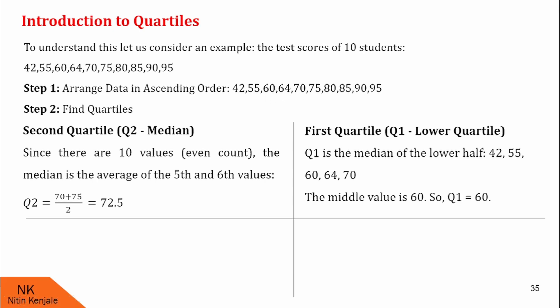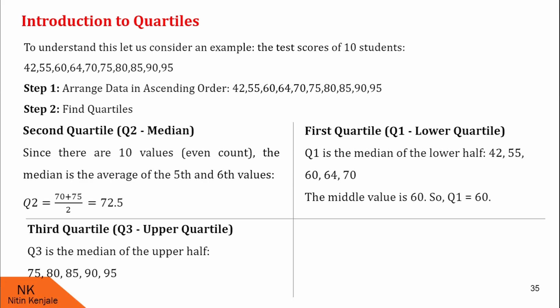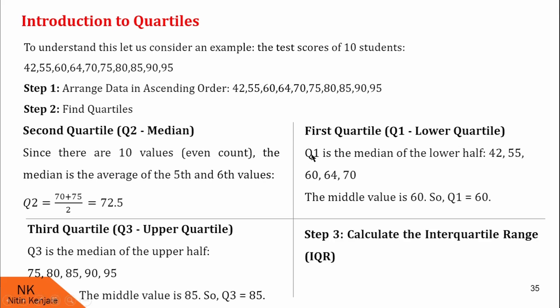Similarly, we find quartile three, which is the median of the upper half. The upper half values are 75, 80, 85, 90, and 95. The median of this is 85. Therefore Q3 is 85. Finally, the interquartile range using Q3 minus Q1 gives us 85 minus 60 equals 25. So IQR is 25.